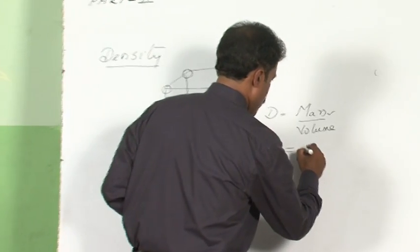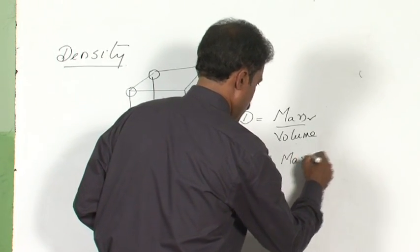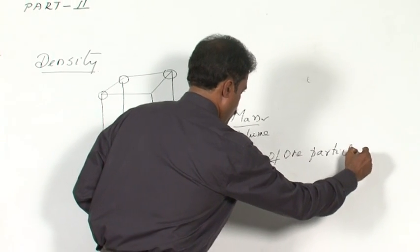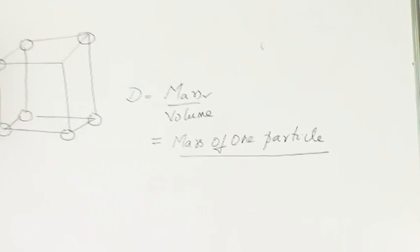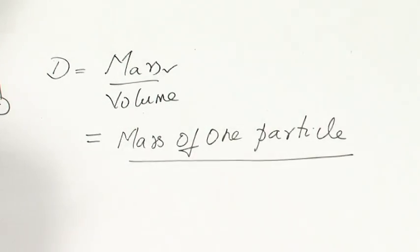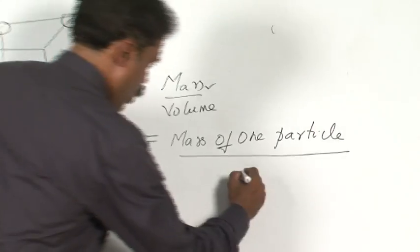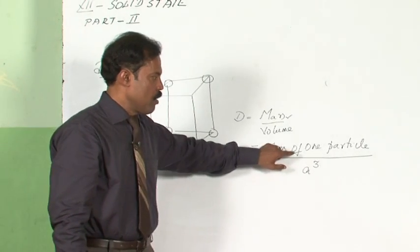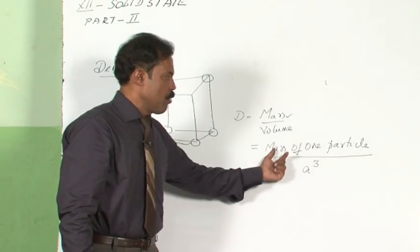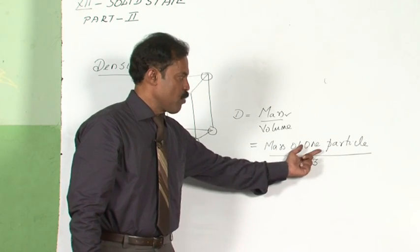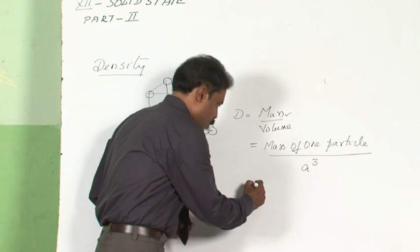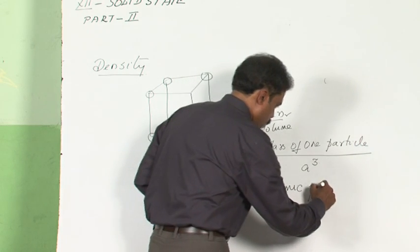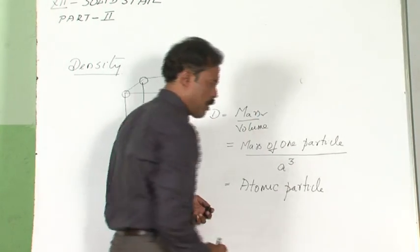The mass of the unit cell is simply the mass of one particle in simple cube, since the effective number of particles is just 1. If we consider edge length as a, the volume is a³. To find the mass of one particle, we use the atomic mass of the particle — assume the crystal is made up of atoms.